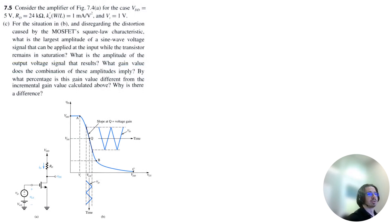Let's take a look at part C. For the situation in B, which just stated that V overdrive was 0.5, disregarding the distortion caused by the MOSFET square law characteristic, what is the largest amplitude of a sine wave voltage signal that can be applied at the input while the transistor remains in saturation? So that's really asking, what's the biggest value here, VGS? We can apply such that we do not exit the region between A and B because this is the saturation region.